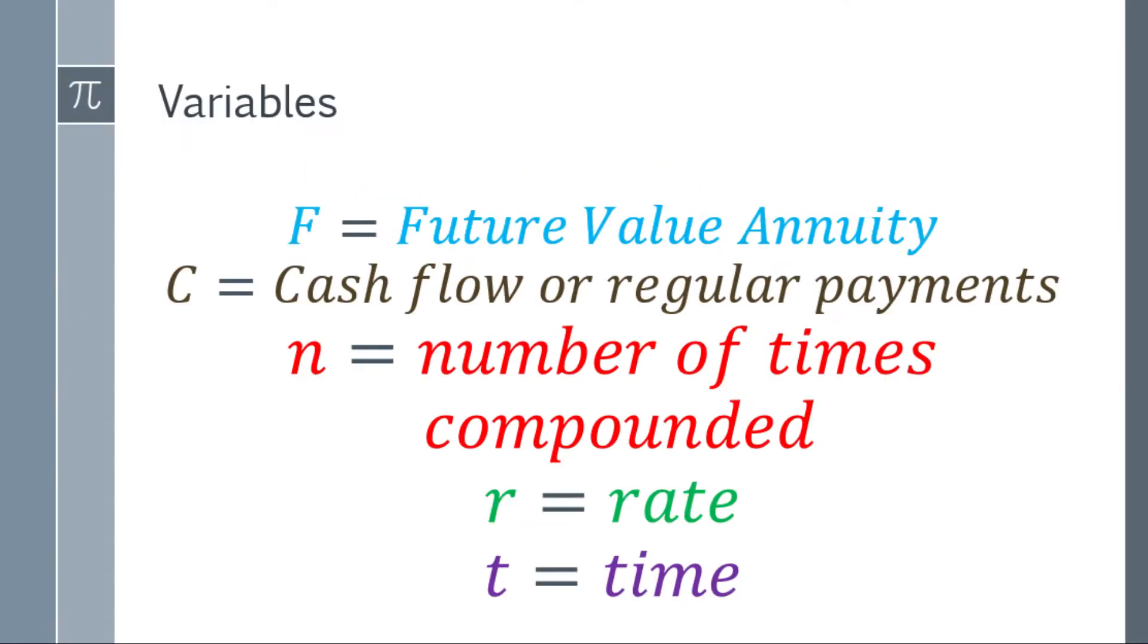Let's start with the variables we'll be using. Letter F represents Future Value Annuity. Letter C is the cash flow or regular payments. N will be the number of times compounded or compounding frequency. R is for the rate and T is for the time.